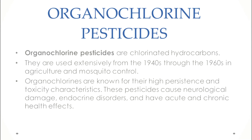Organochlorine pesticides are chlorinated hydrocarbons, meaning these pesticides are made up of hydrocarbons and they contain chlorine. They were used extensively from the 1940s through the 1960s for agricultural purposes and for mosquito control. Organochlorines are known for their high persistence and toxic characteristics.